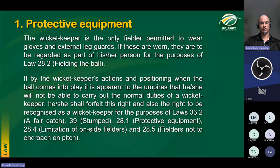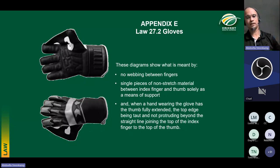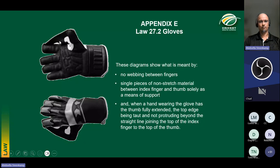These are examples of the keeper's gloves. The law allows for no webbing between fingers. There shall be a single piece of non-stretch material between the index finger and the thumb, solely for means of support. About 20 years ago this pouch used to look like a baseball glove — it was huge — but lawmakers outlawed that. Only a piece of non-stretch material is allowed.